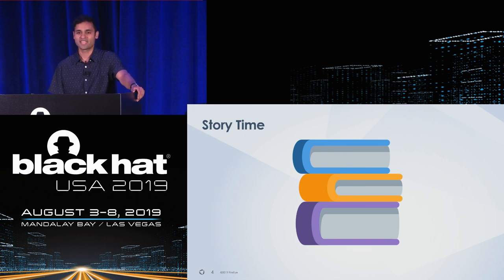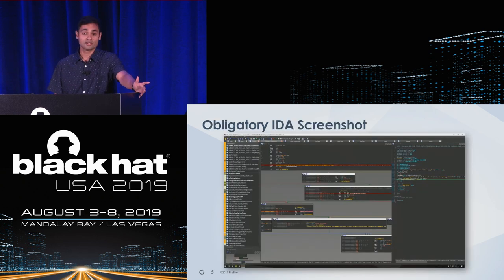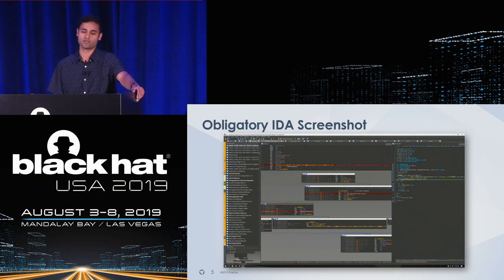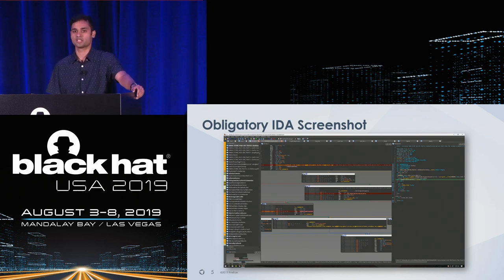They have a saying that when you're a hammer, everything looks like a nail. Well, when you're a reverser, everything needs to get dropped into IDA Pro. So I closed out my malware ticket, cracked open the Windows 10 kernel, and started reversing. This presentation is the result of that analysis, as well as the integration into Volatility and Recall, so you don't have to go through this effort.